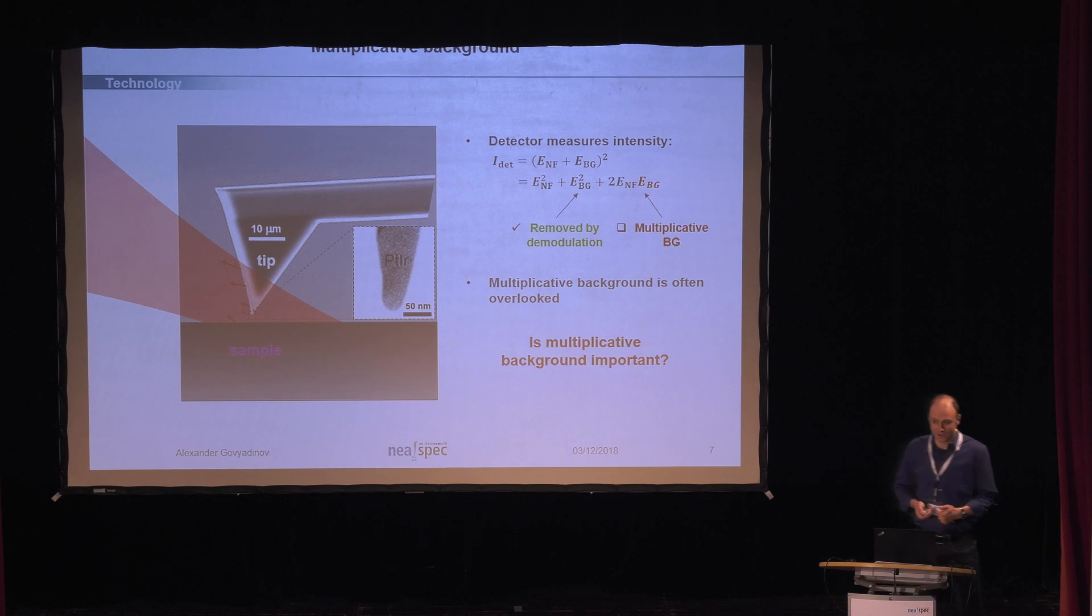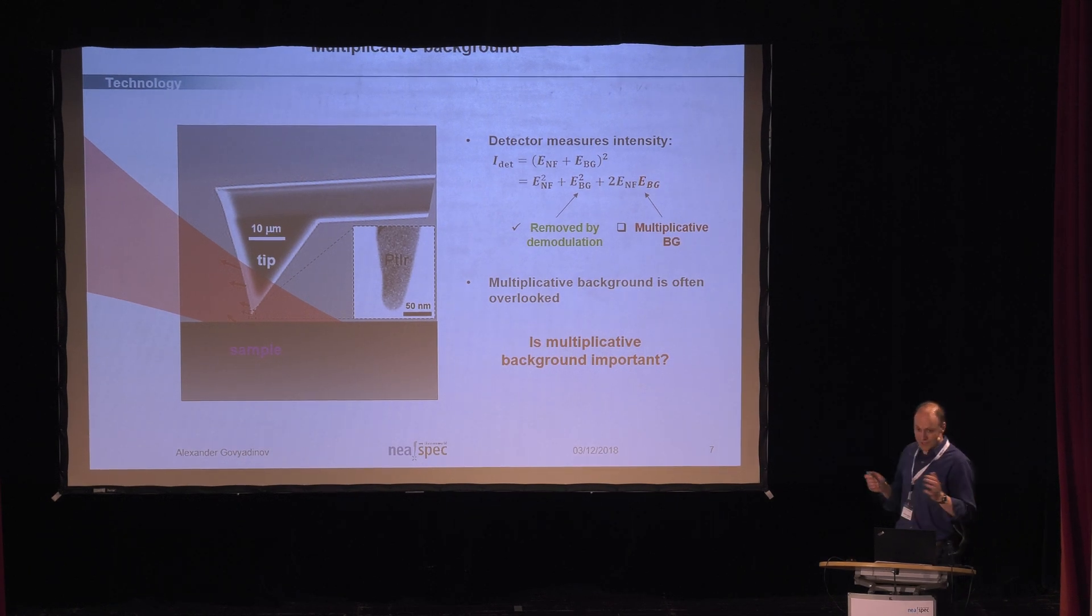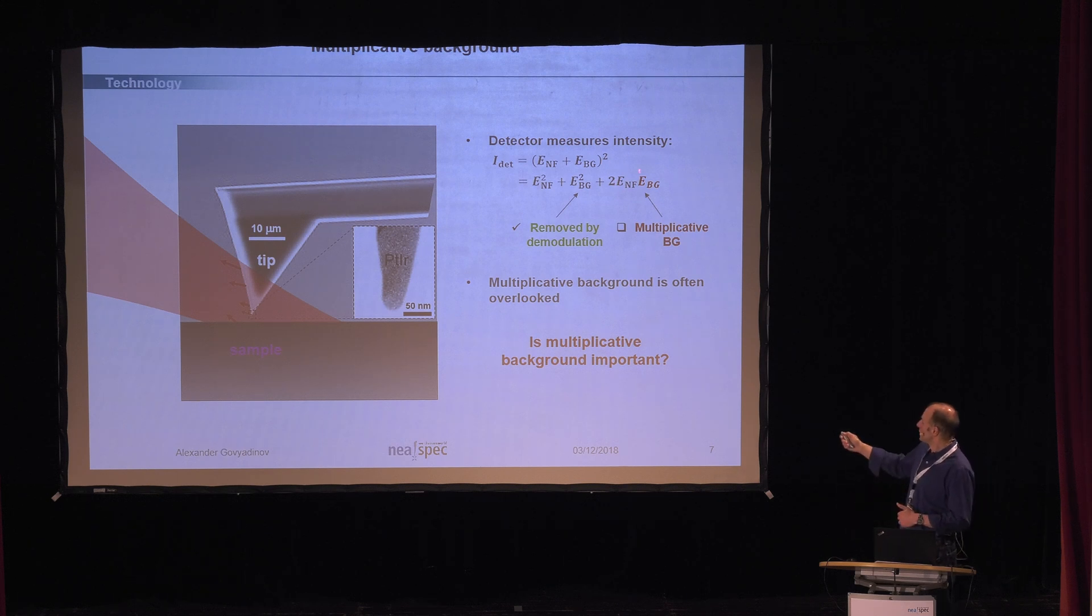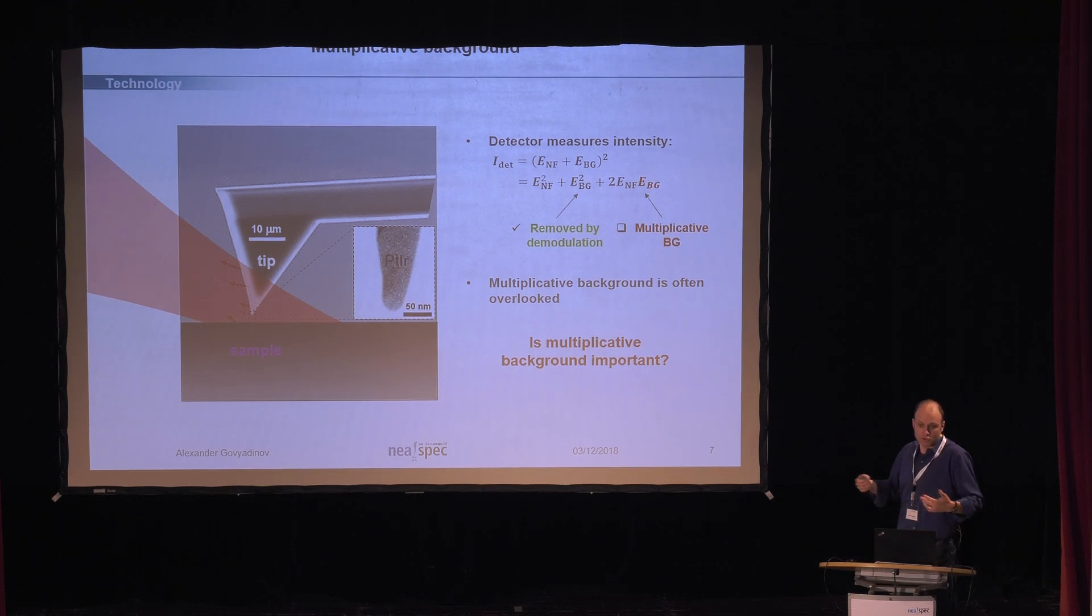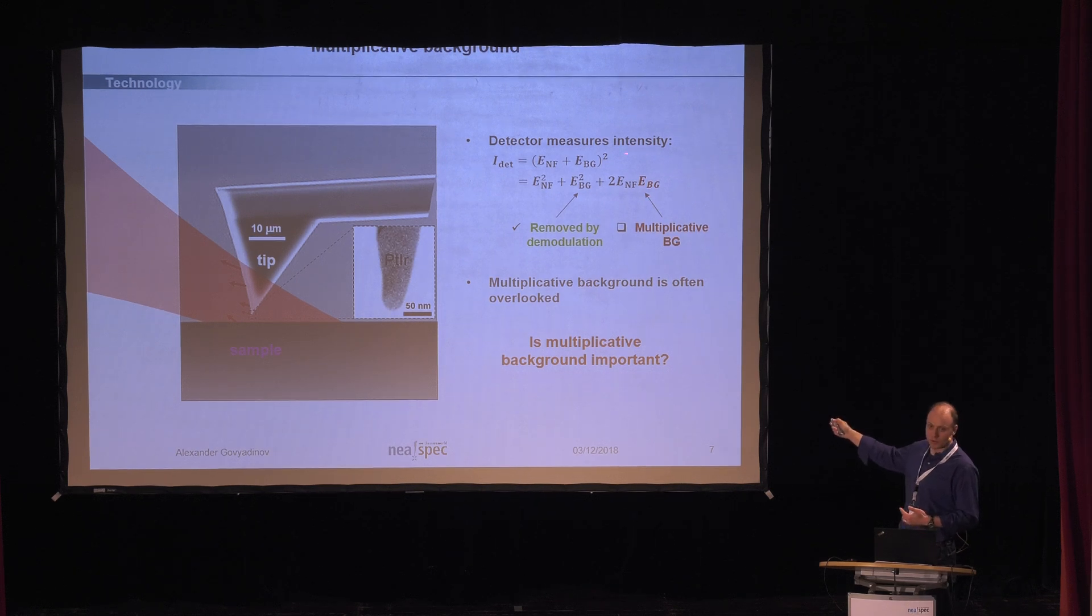Would it be enough? Is it enough? So essentially, sharp tip and high harmonic demodulation give us a nanoscale resolution. Is it so? It turns out that not quite. And this is something which is important in the technology. So actually, the detector measures not the field, but the intensity. Just a general principle. The detector always measures the density. So it's the sum of the background and the near field. If you square it, that's essentially the intensity. So you will have three terms. This is the background term. It is suppressed by the demodulation. But there's one more term here, which is a product of the near field and the background. And this one, it's also modulated quite heavily because it has the near field part. So this term is called multiplicative background. The reason for that is because it's a product of the near field and the background. And this background is actually, multiplicative background is often overlooked.